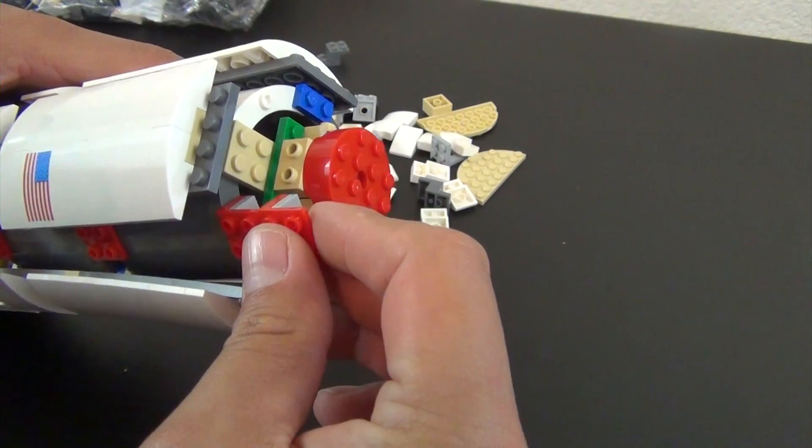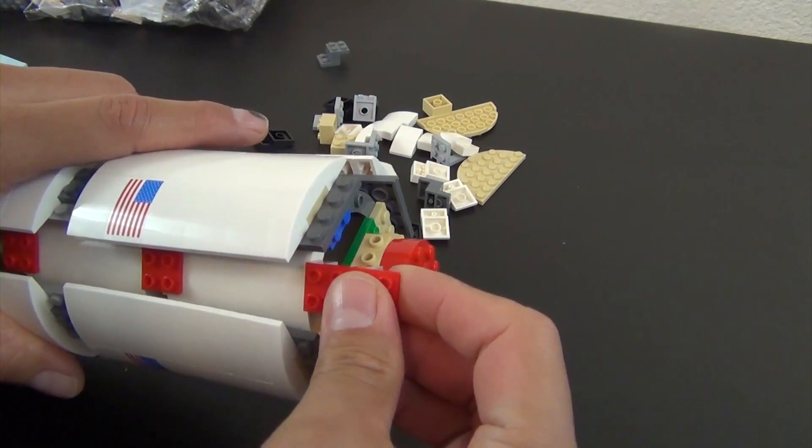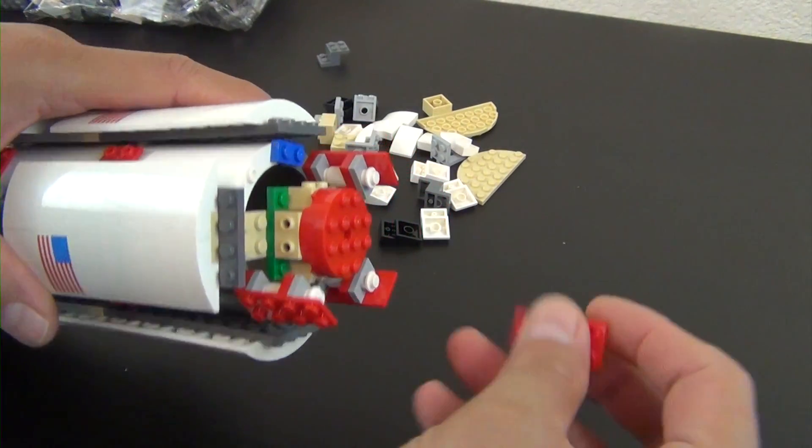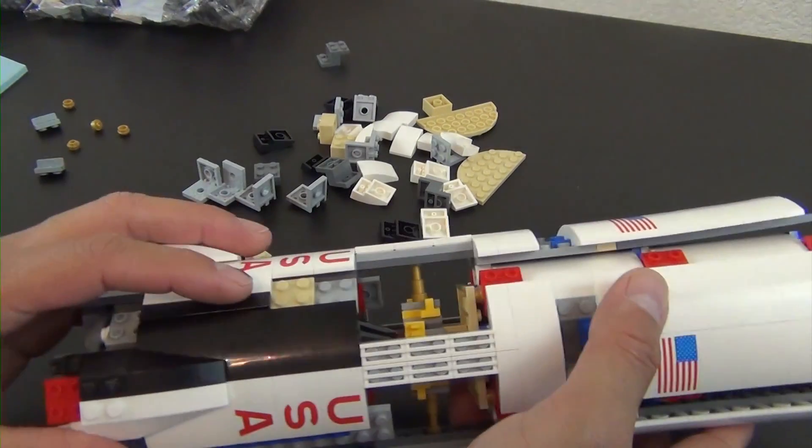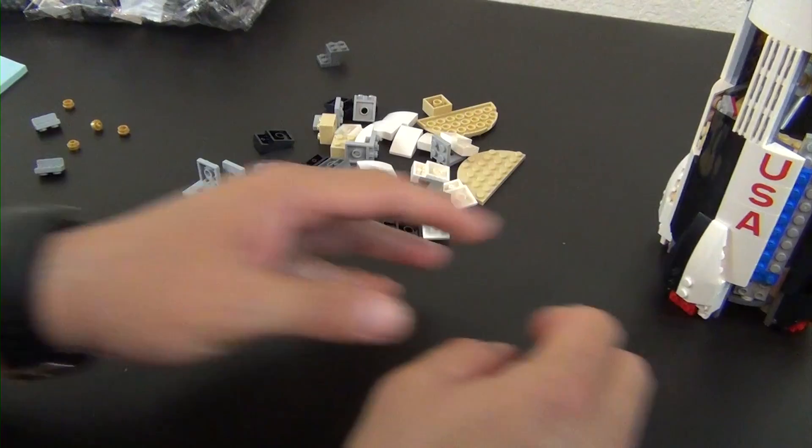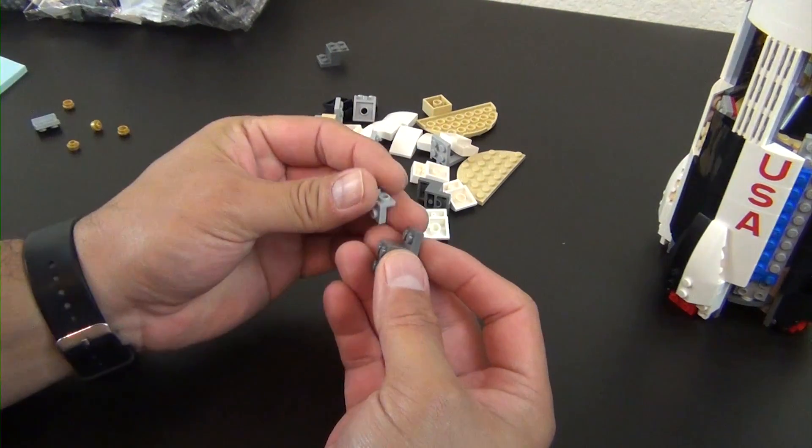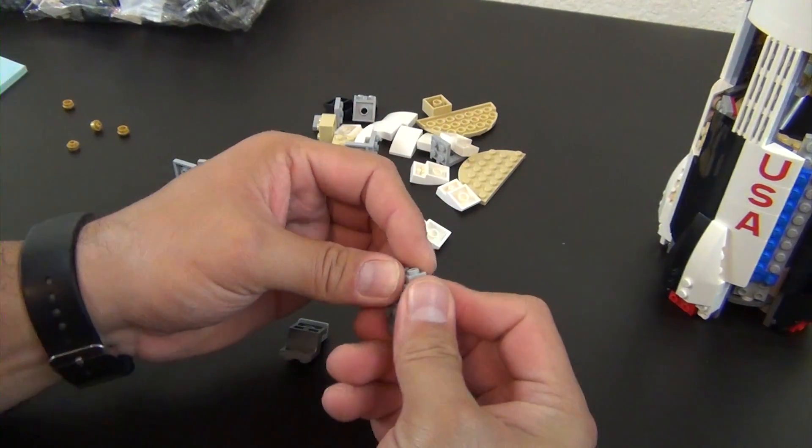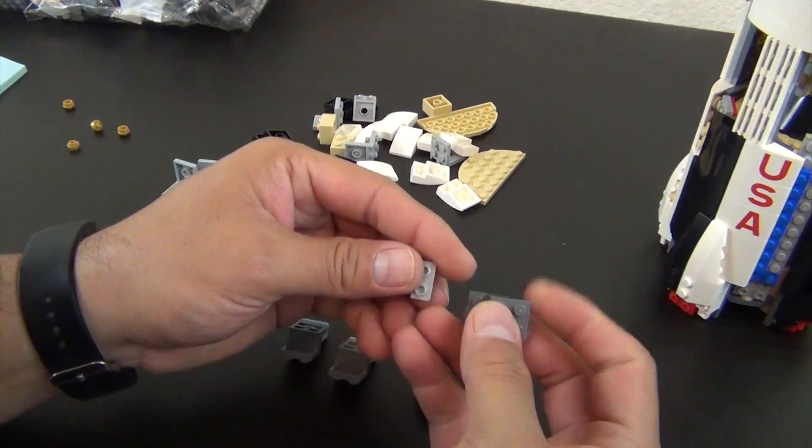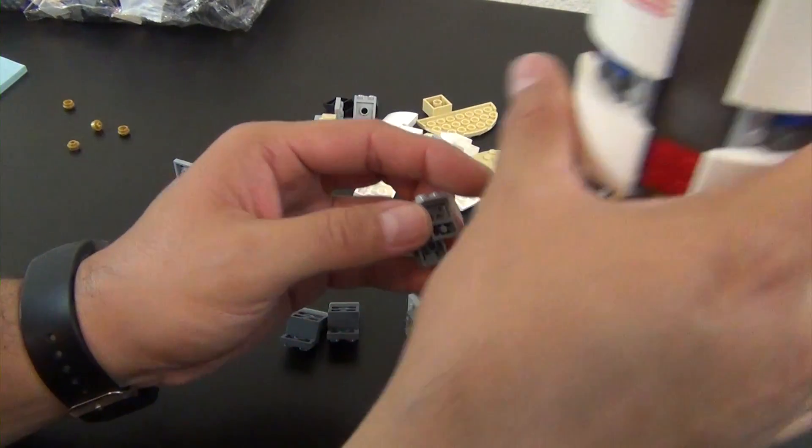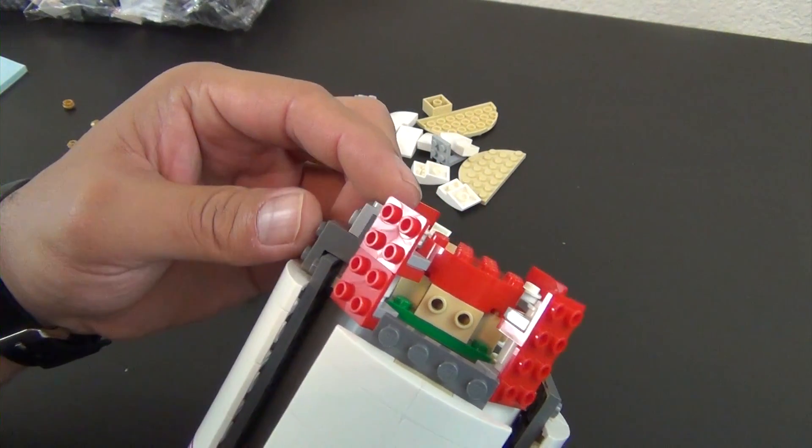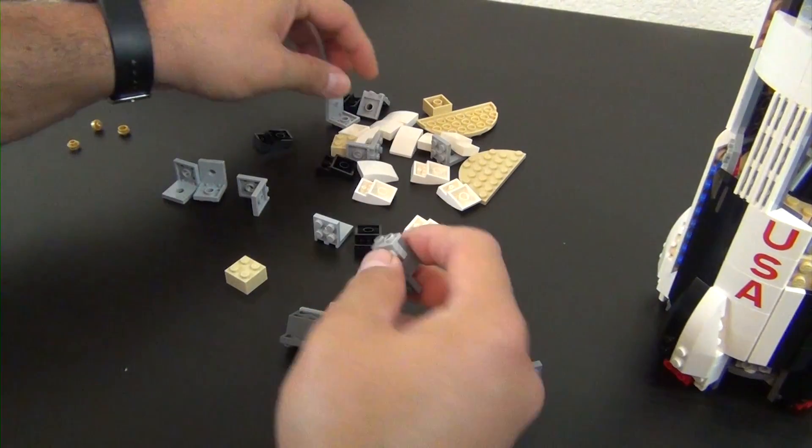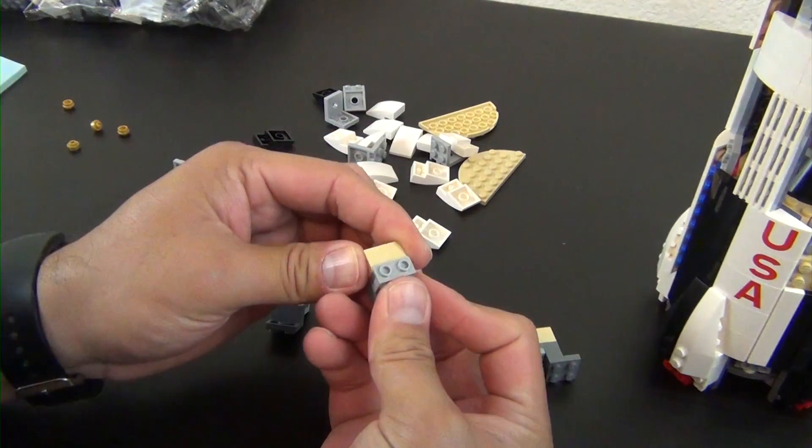See this, all attaches to the studs there. I'm being very gentle with this because it's really not that sturdy just yet. We have these little Z-shaped bricks, putting a bracket on each one. All right, so this is what's going to help.